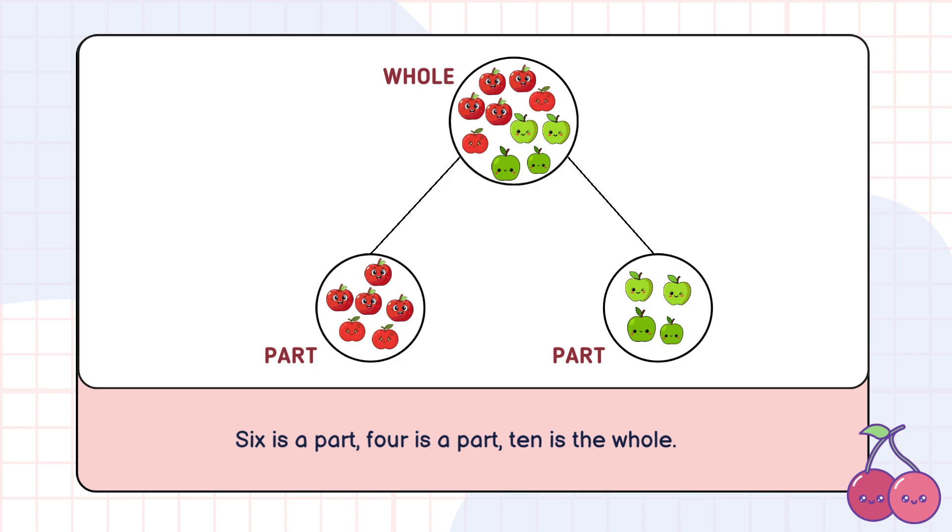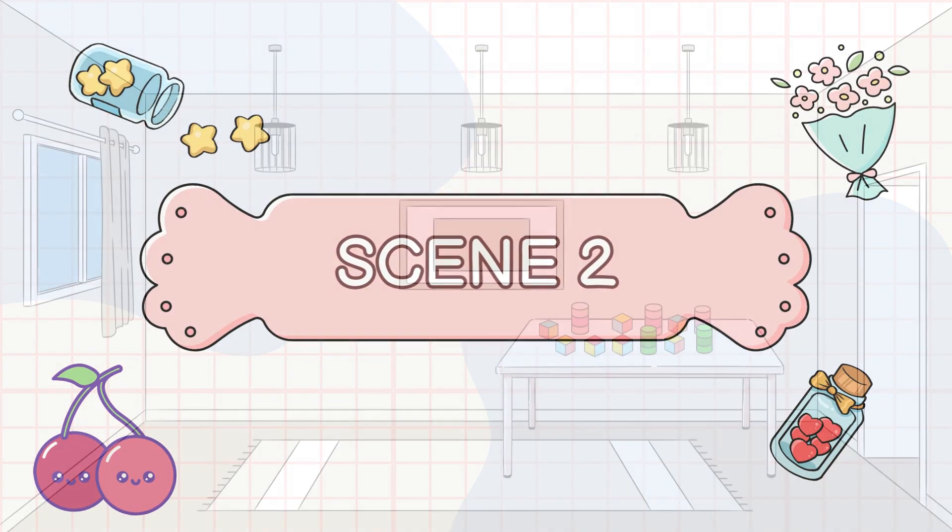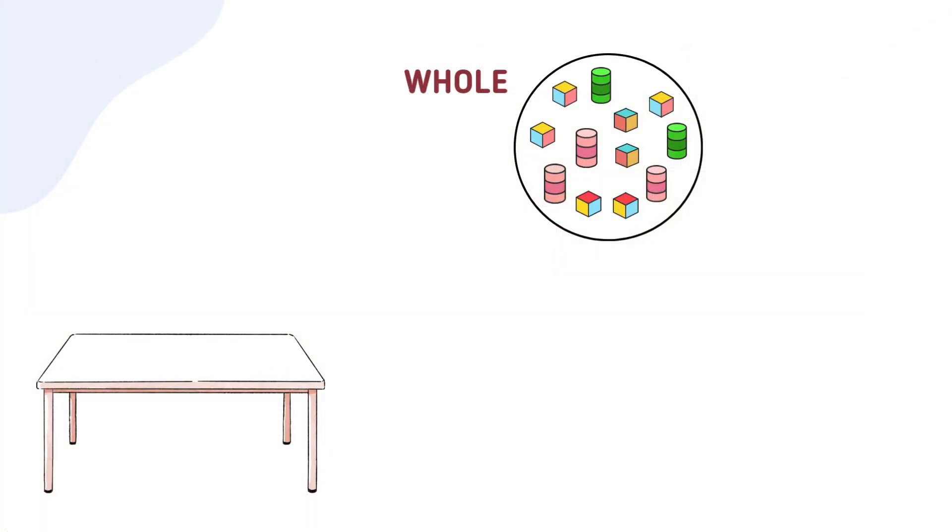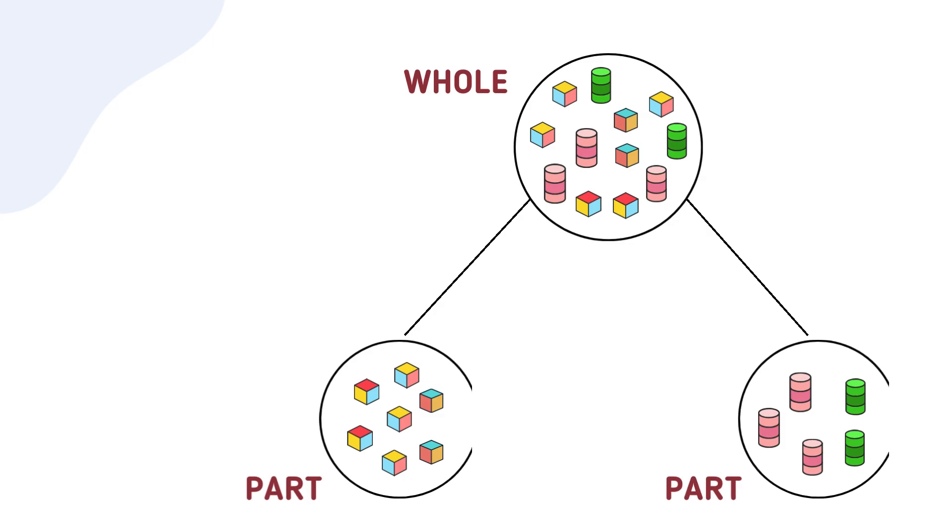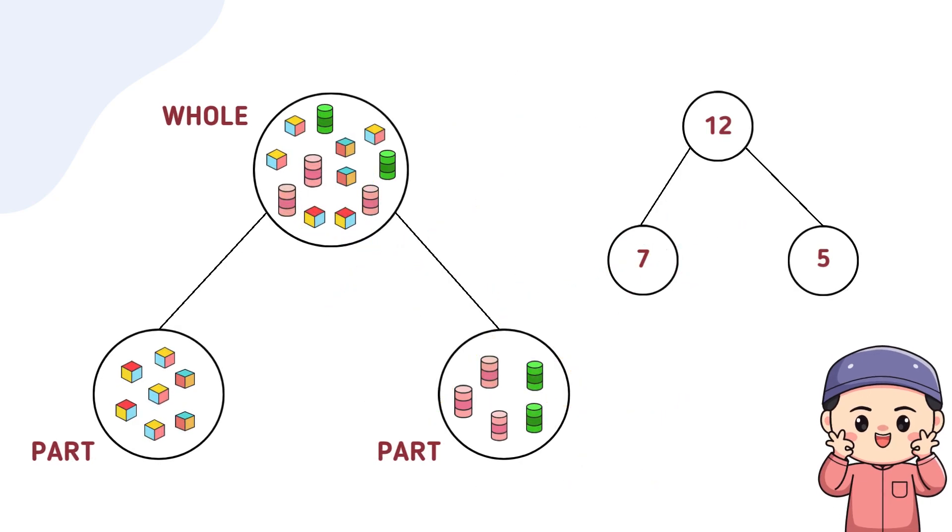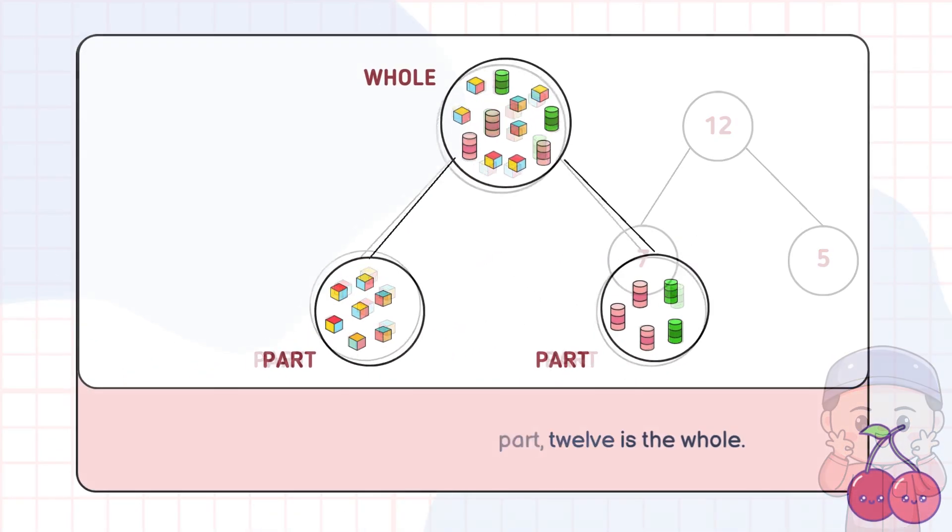Imagine you have 12 building blocks. Some are cubes and others are cylinders. Here, the whole group is 12 blocks. The parts are 7 cubes and 5 cylinders. See how the parts might look different in shape but together form the whole? Blocks come in all shapes and sizes, just like fruits in a basket.